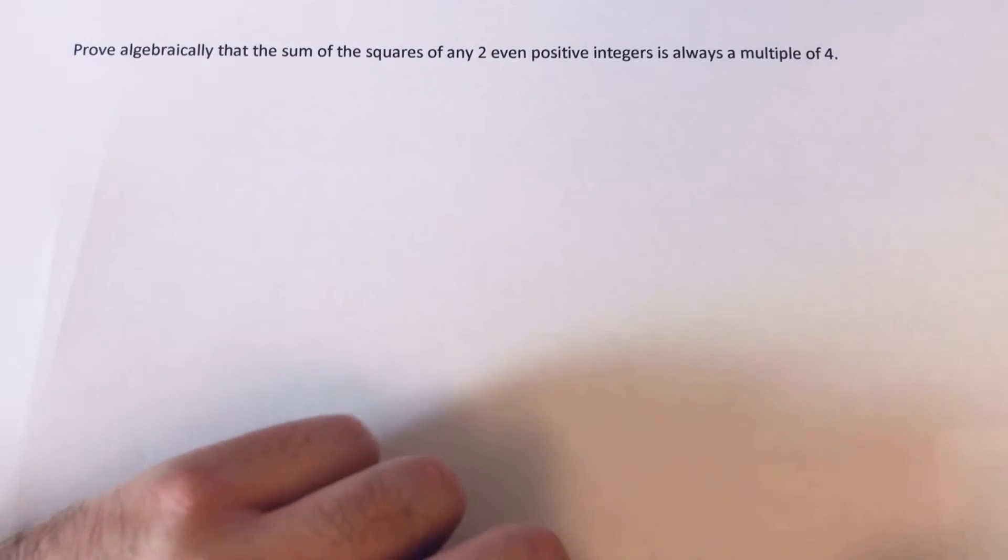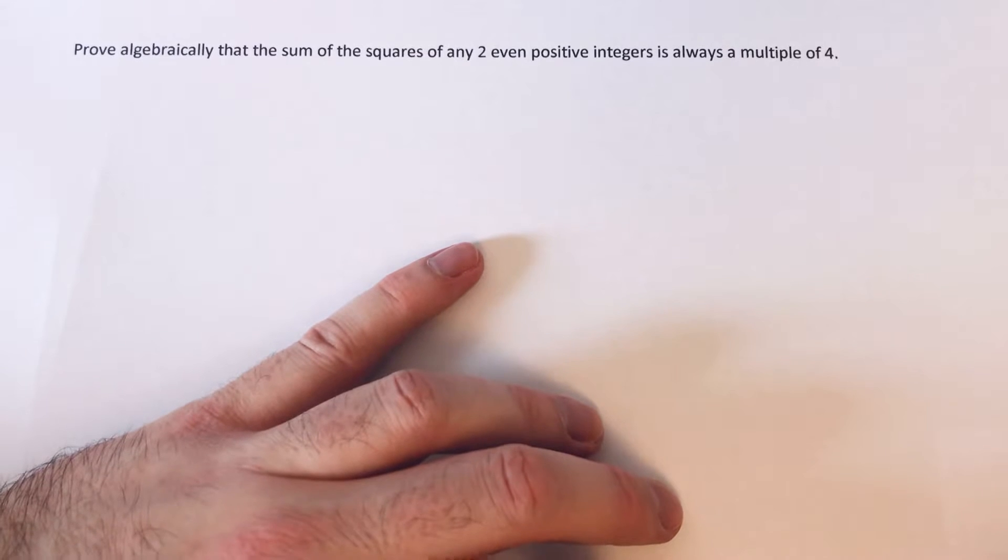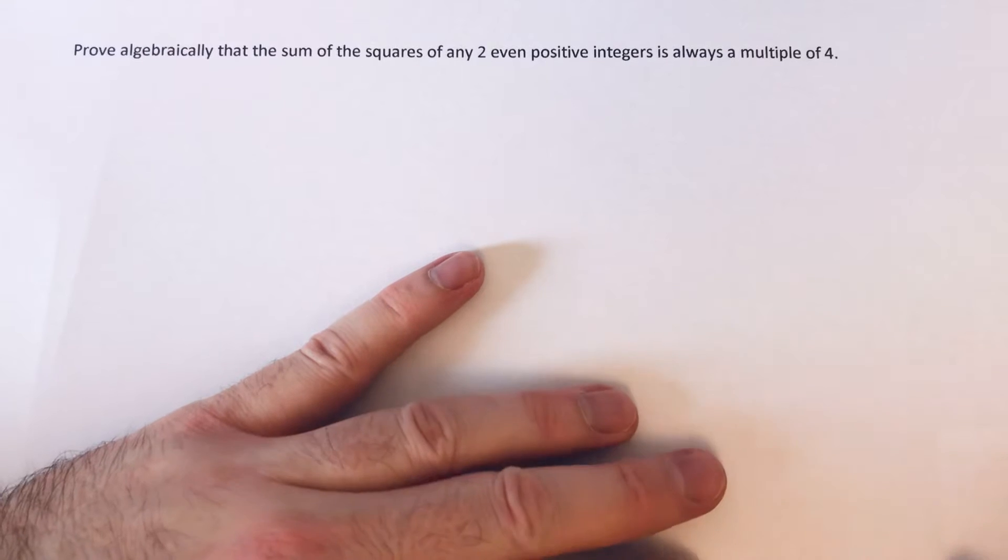Hi guys, welcome back. Today I'm going to prove algebraically that the sum of the squares of any two even positive integers is always a multiple of 4.